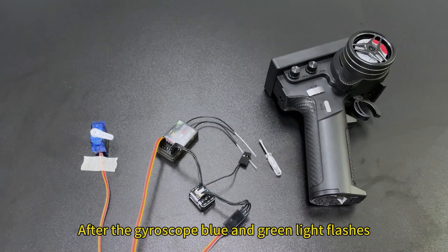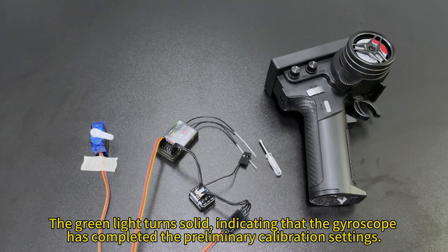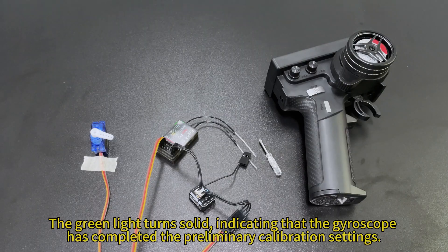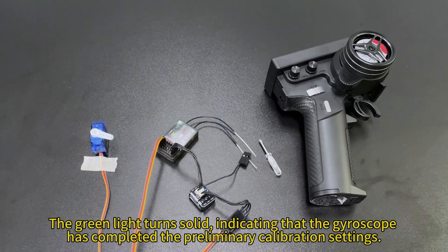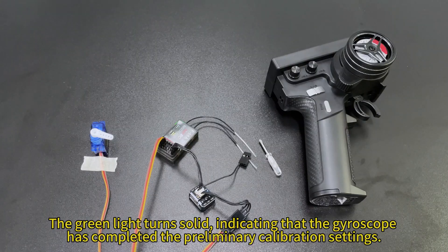After the gyroscope blue and green light flashes, the green light turns solid, indicating that the gyroscope has completed the preliminary calibration settings.